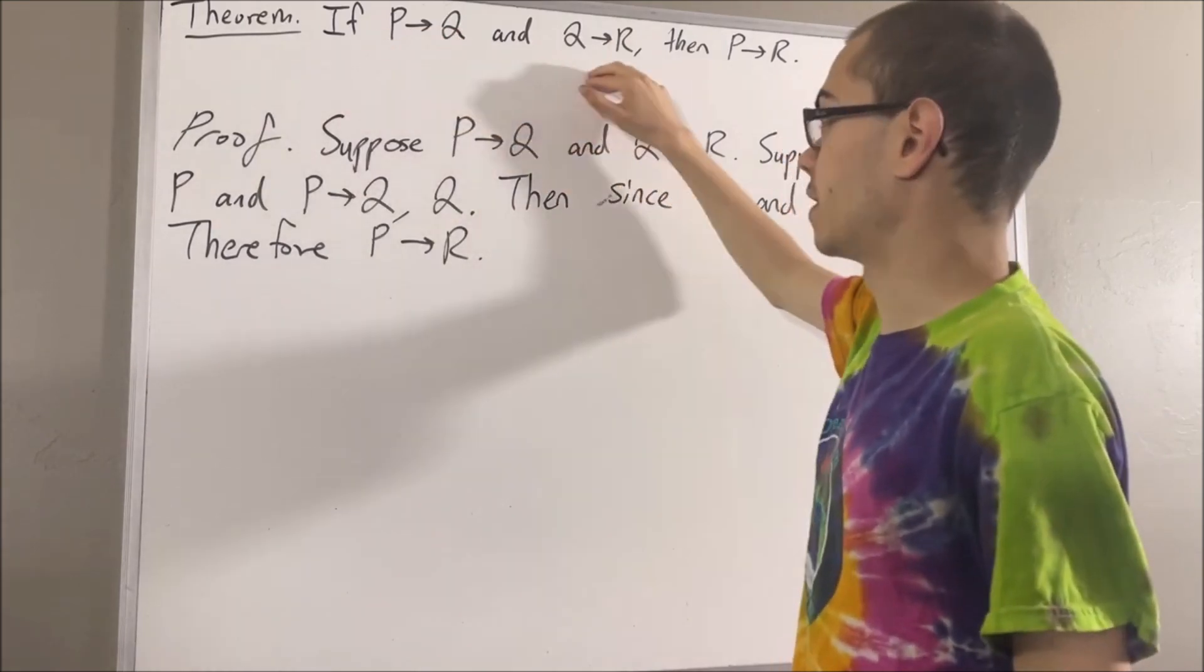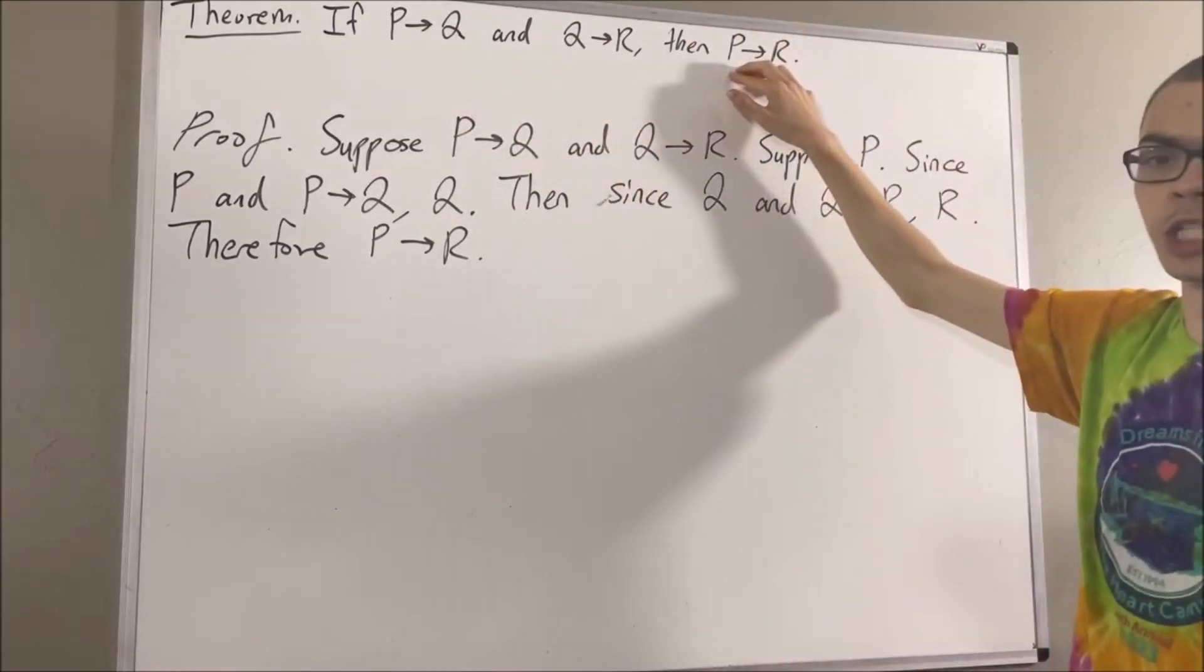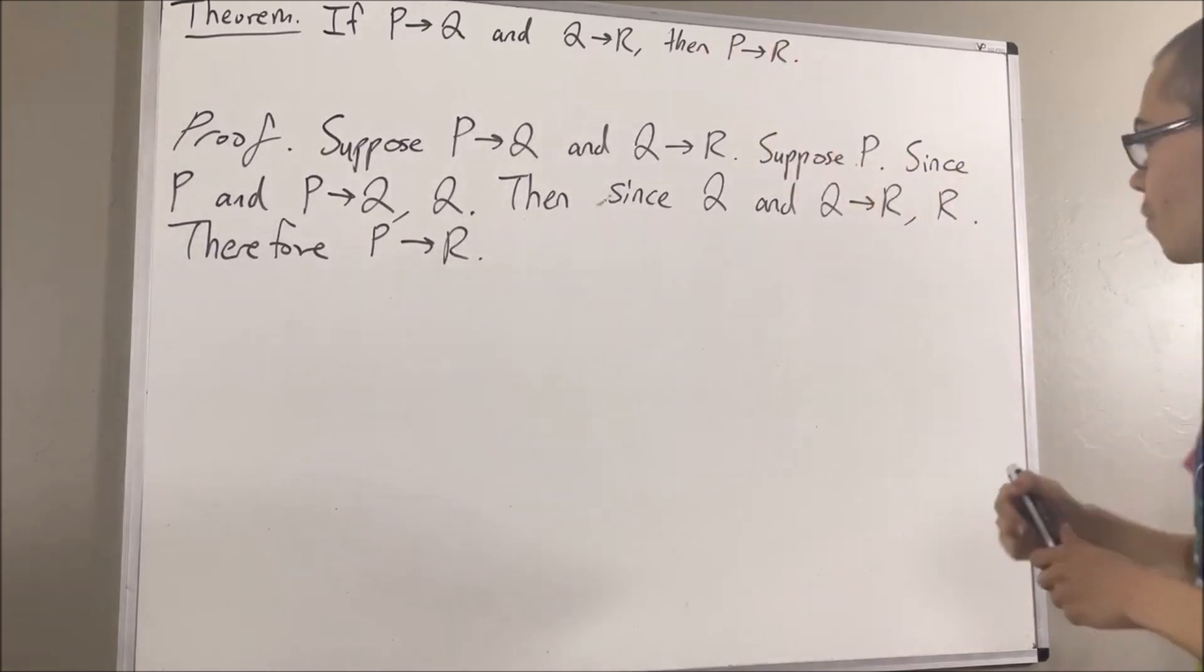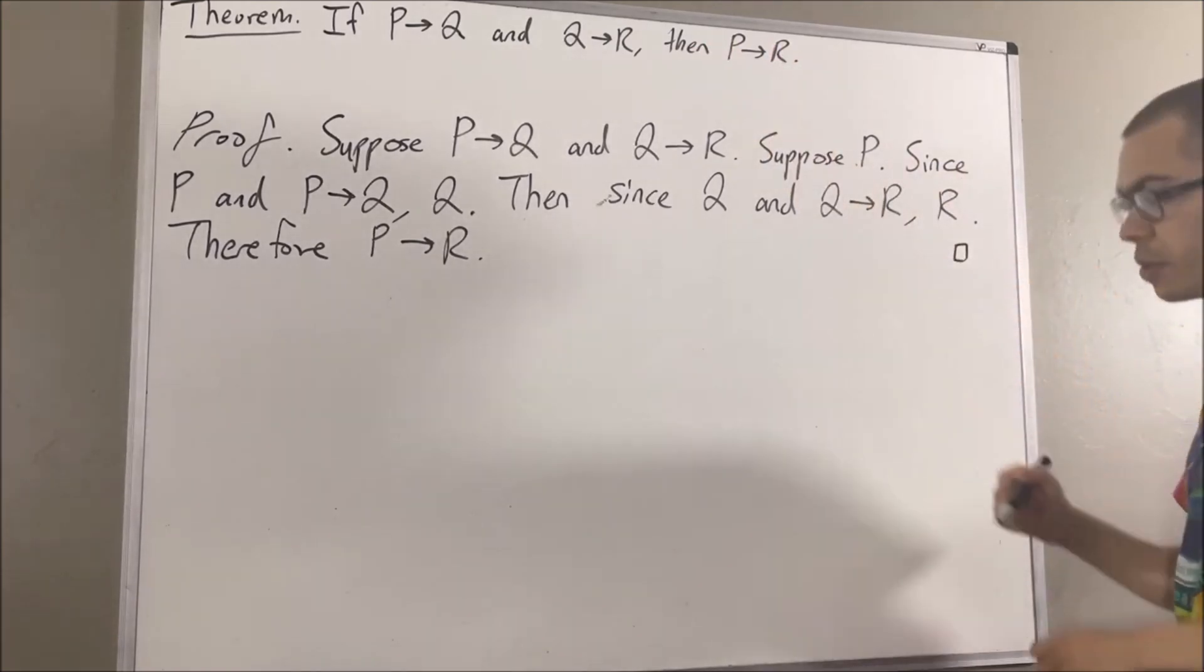So if these things are true, then P implies R is true. And that's exactly what we wanted to prove. So this completes the proof.